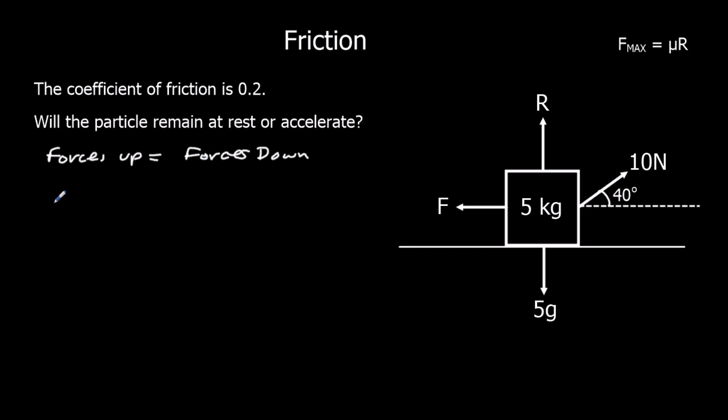Forces up equal forces down. Going up we've got R and we've got 10 sin 40, and that is equal to forces going down which is 5g. We know forces up equal forces down because it's not going to move up, it's not going to fly up into the air, it's not going to go through the surface. So R is 5g minus 10 sin 40. We can type that in the calculator. 5 times 9.8 minus 10 sin 40, and that gives us 42.6.